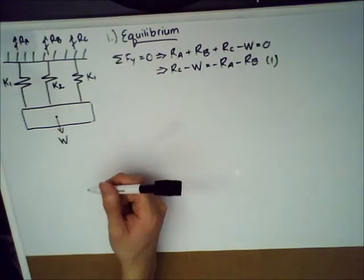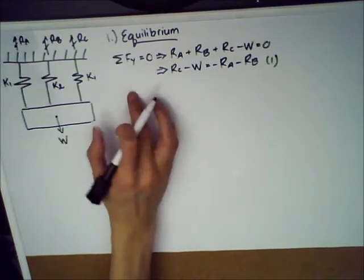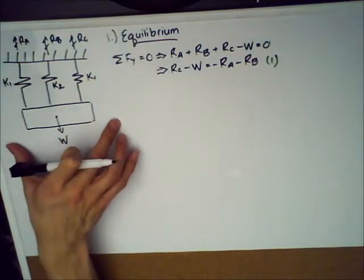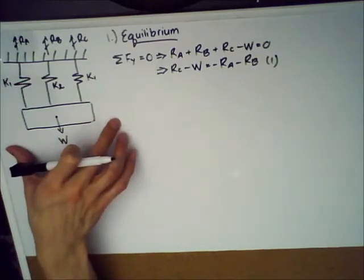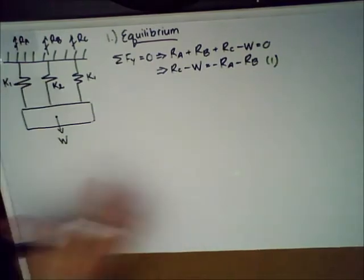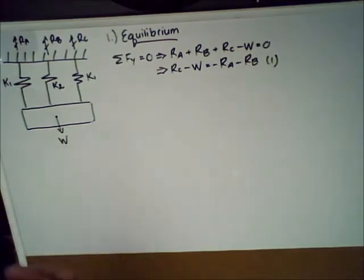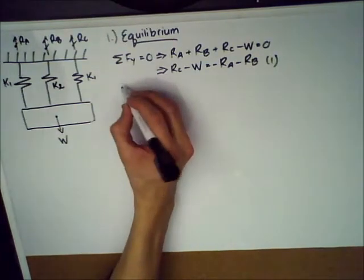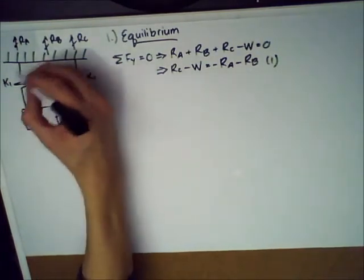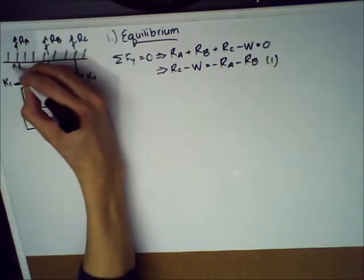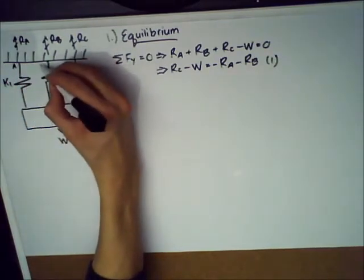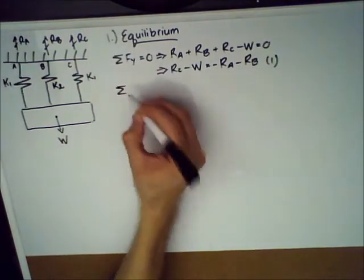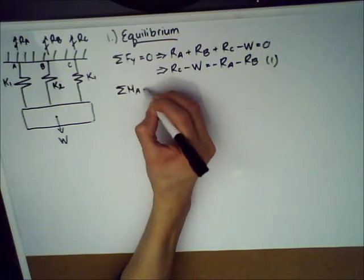So for the next one, in the X direction, an equilibrium of forces in the X direction doesn't really tell us anything because there's nothing happening in that direction. So it doesn't provide us with any information. So let's skip that and go to a moment balance. Let's pick this point. I'll call this point A and for completion, I'll call this point B and this one point C.